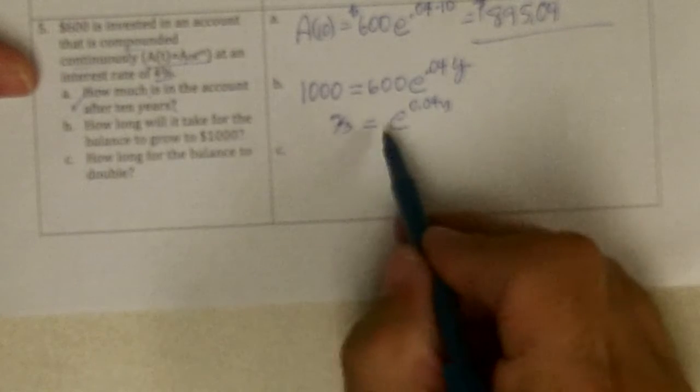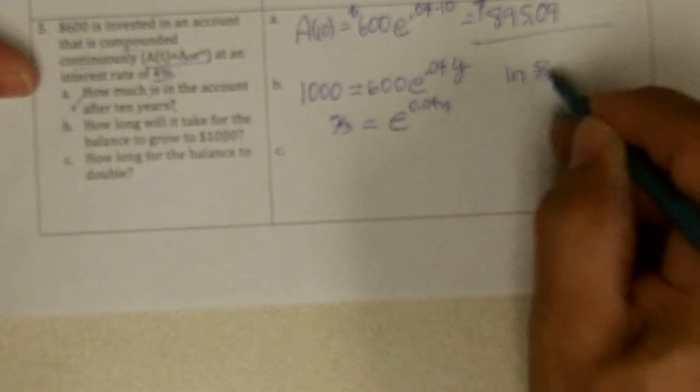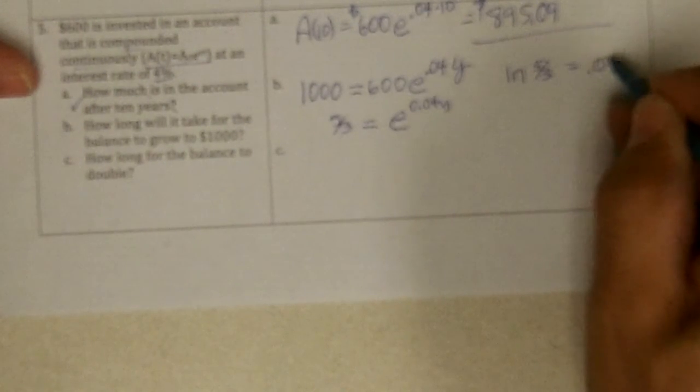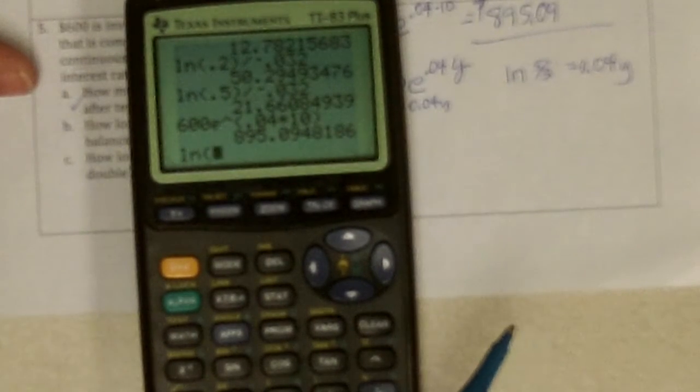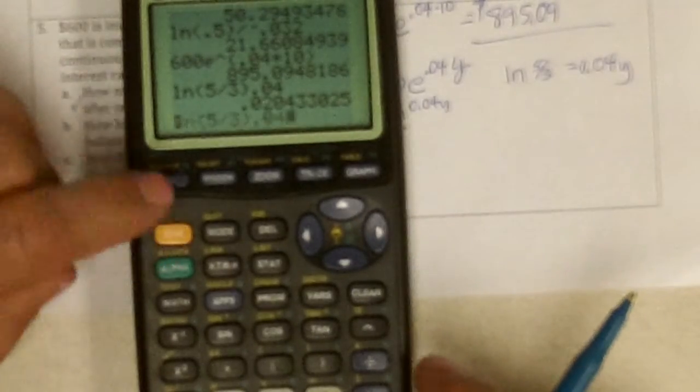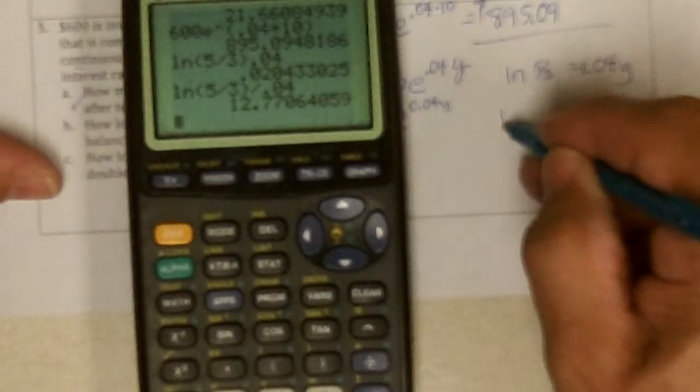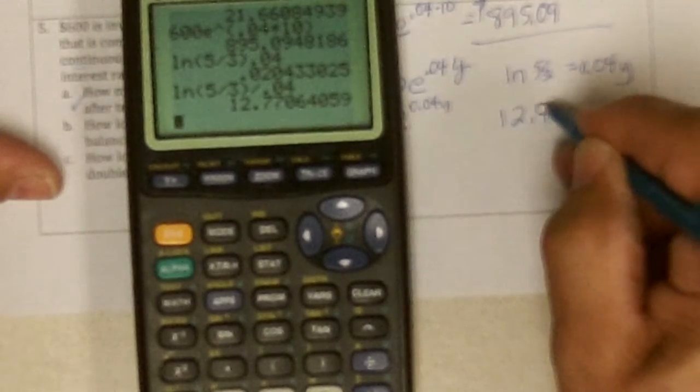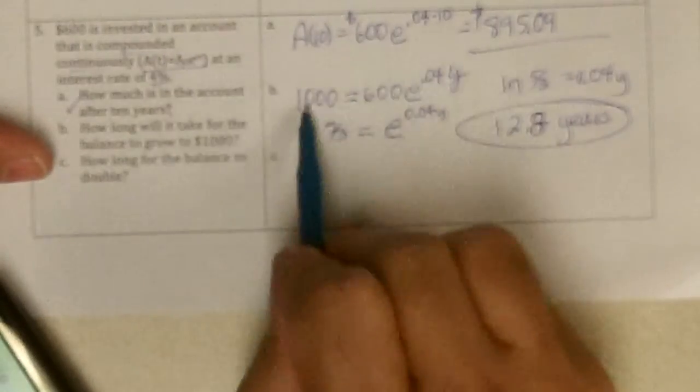This is a power equation, so base e, so I'm going to change it to a log. To what power do I take e to get 5 thirds, and the answer is 0.04y. So I'm going to do this, divide it by 0.04. Ln, 5 thirds, all of that divided by 0.04. And, oops, I didn't get the divide in there. Insert, divide. And it comes out to be 12.7, 12.8 years. To change $600 to $1,000.